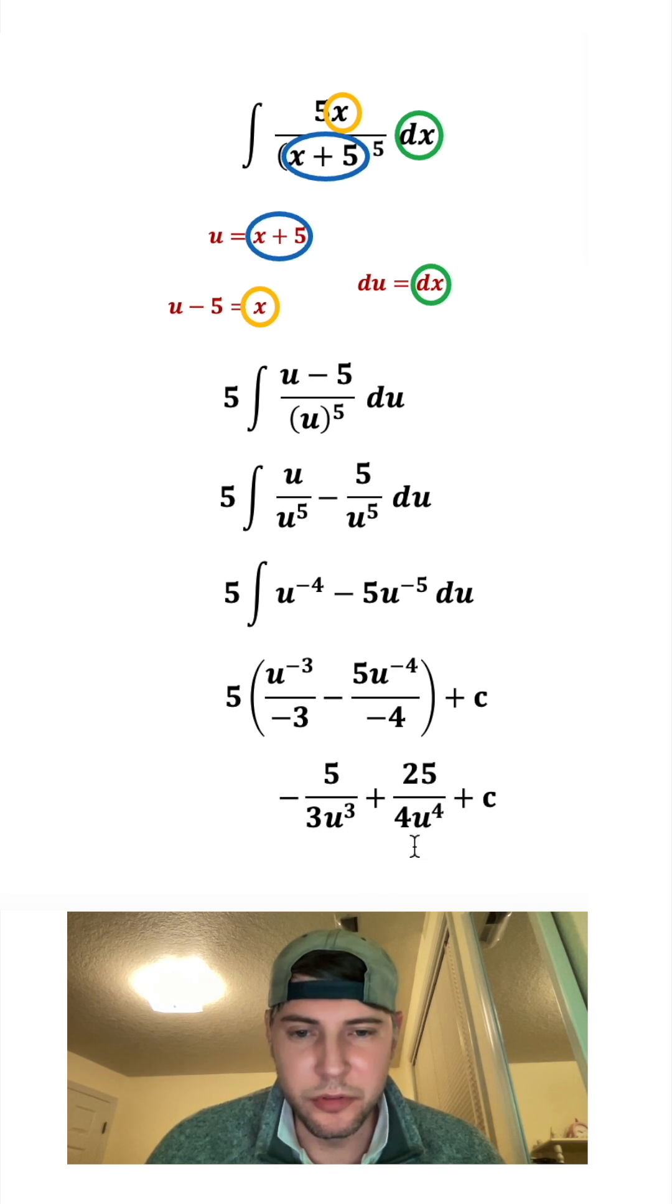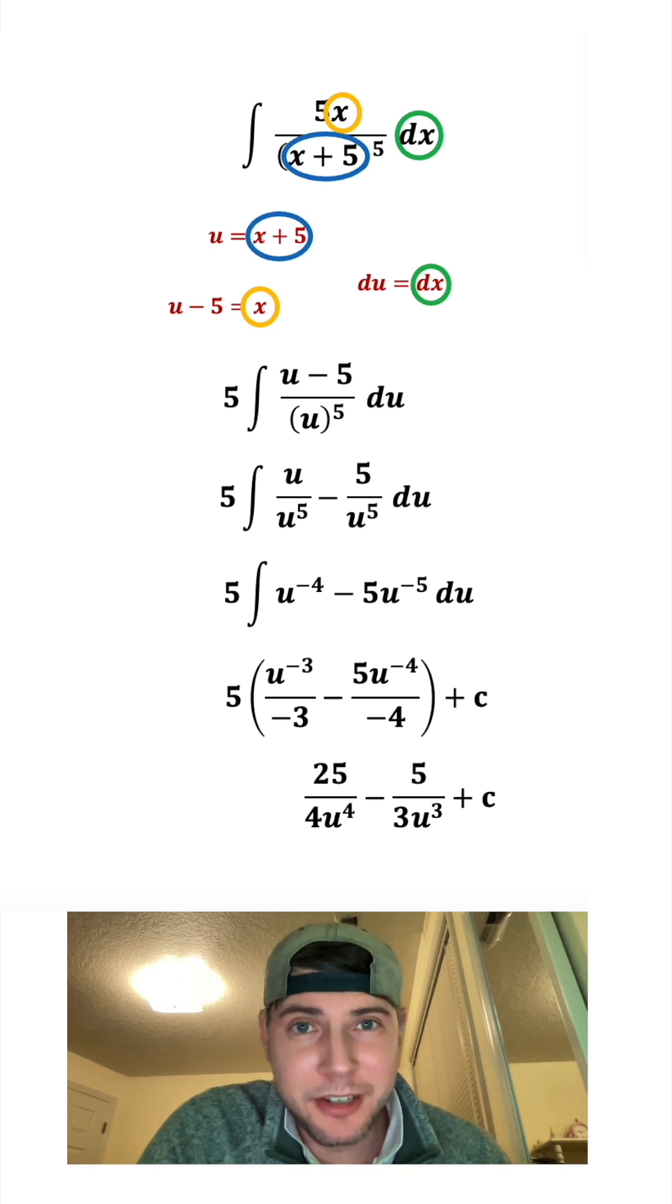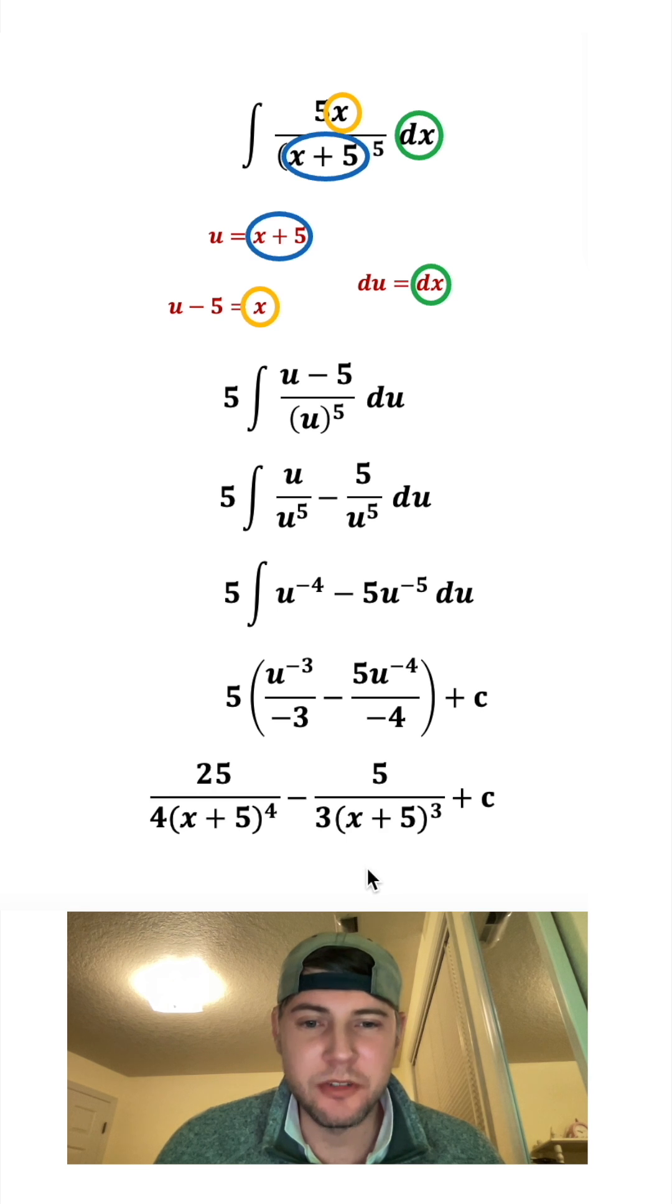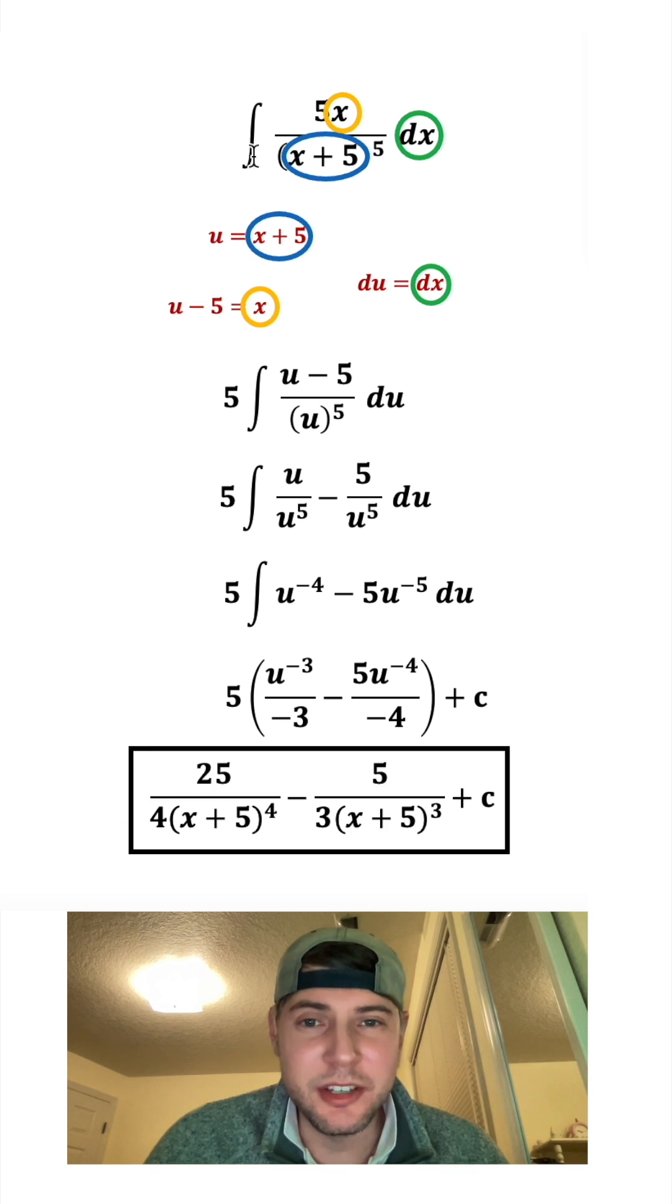I'll put this 25 over 4u to the 4th in front. And now we just need to bring x back. Since u is equal to x plus 5, in the place of each of these u's, we're going to plug in x plus 5. And this is the answer to the question, this is our indefinite integral evaluated. How exciting.